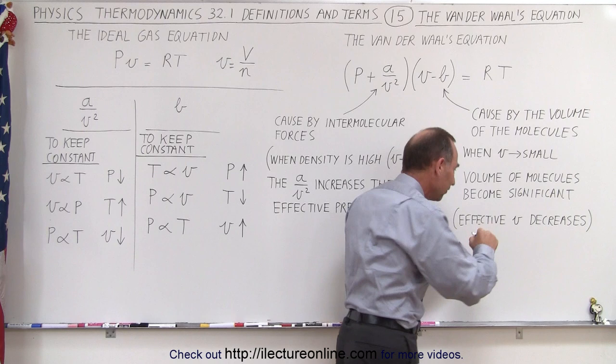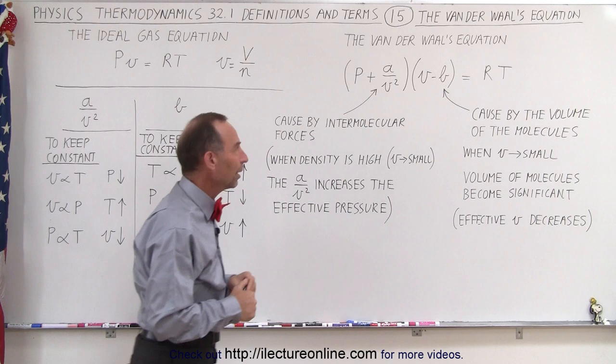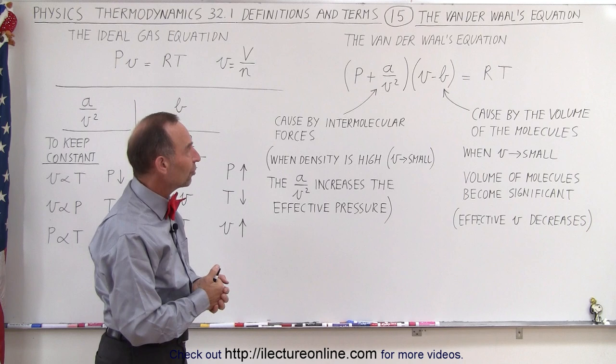and in essence the effective volume decreases. Van der Waals accounted for that by subtracting term b, which again is specific to the particular gas we're dealing with.